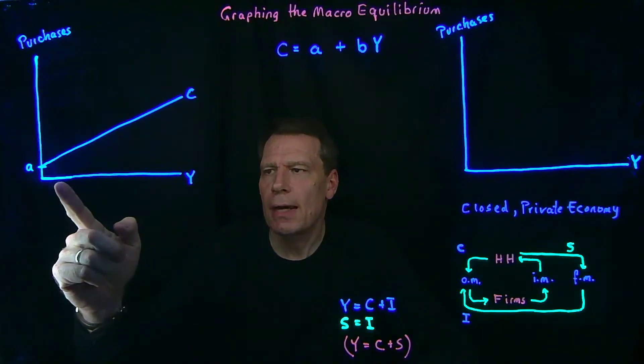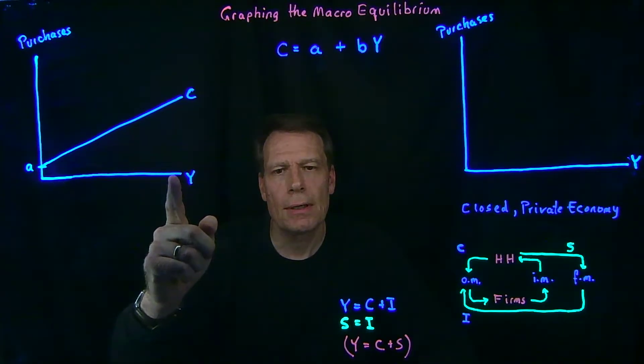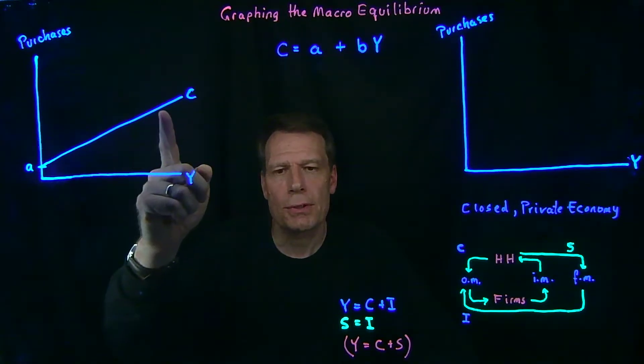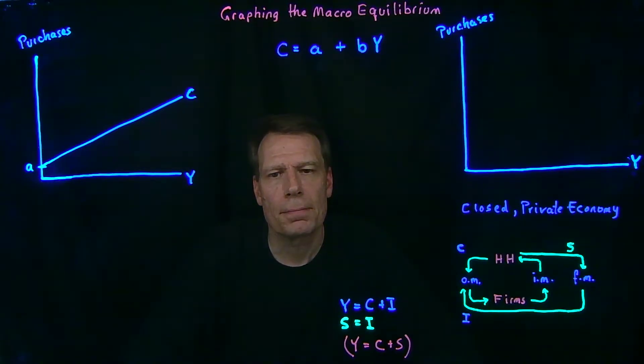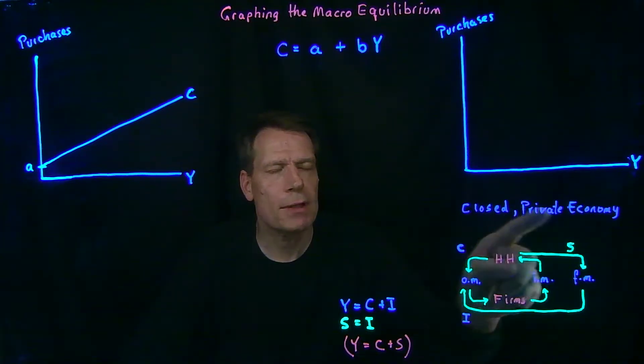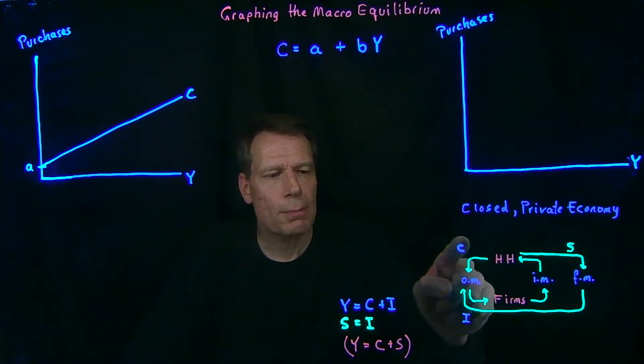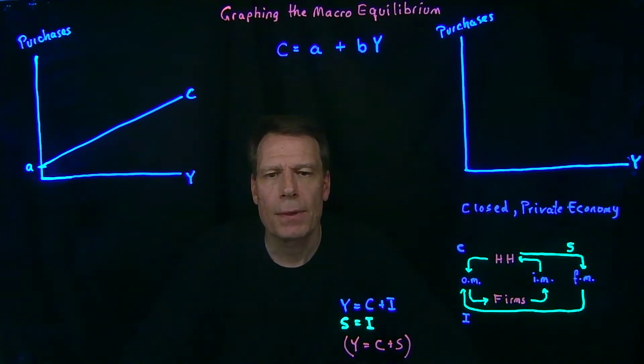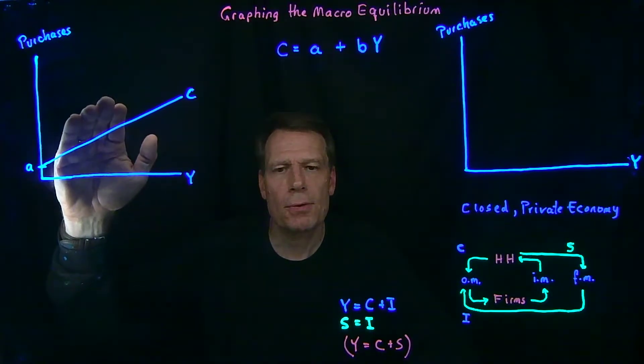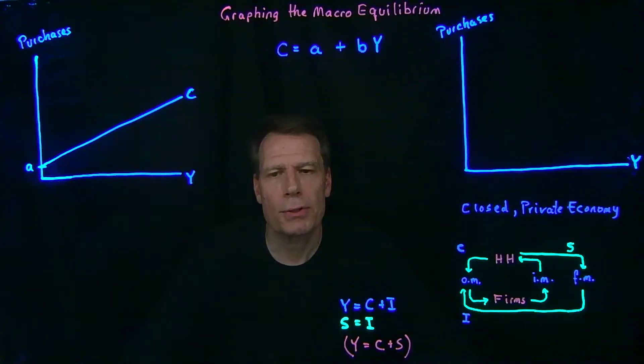It tells us, as income increases, how do household purchases or consumption change? But household purchases or consumption isn't the only kind of purchase in our closed private economy. Purchases include consumption and investment. So we have to add investment to that to measure overall purchases.